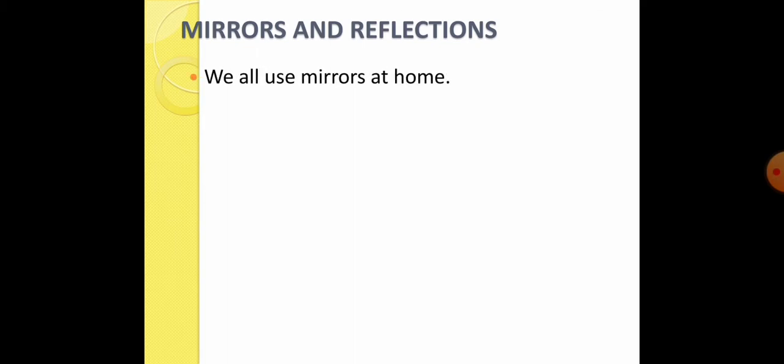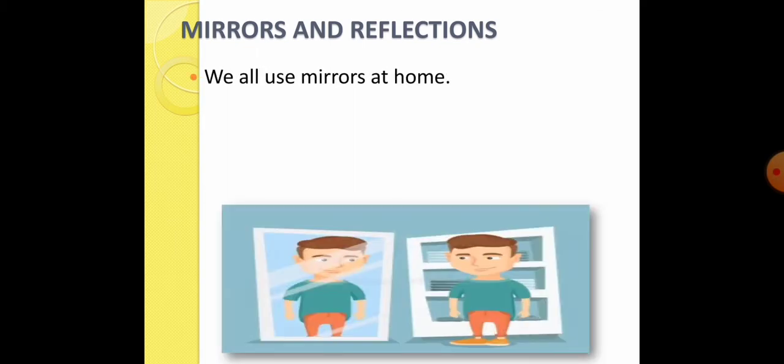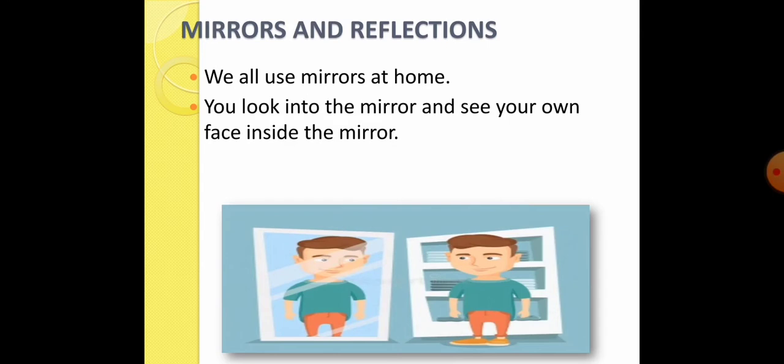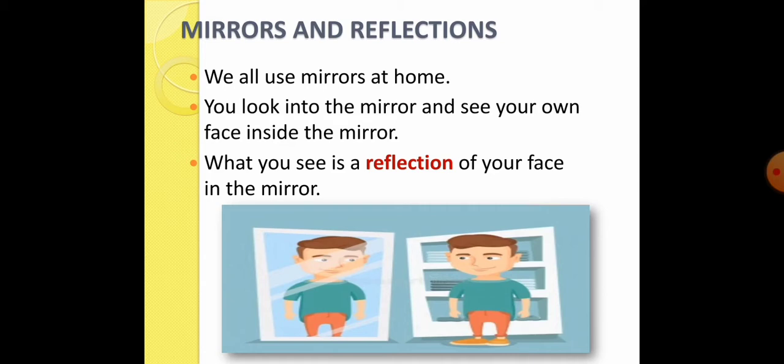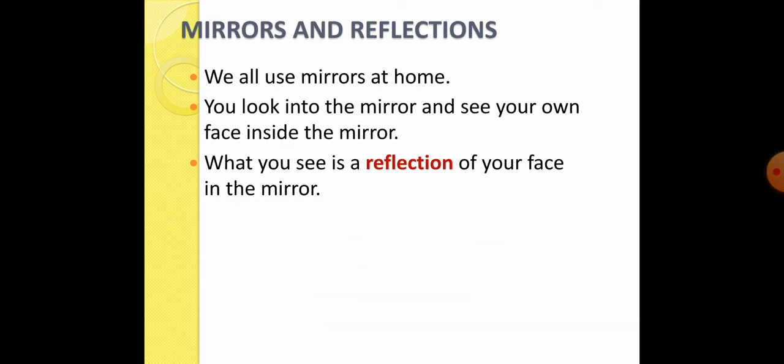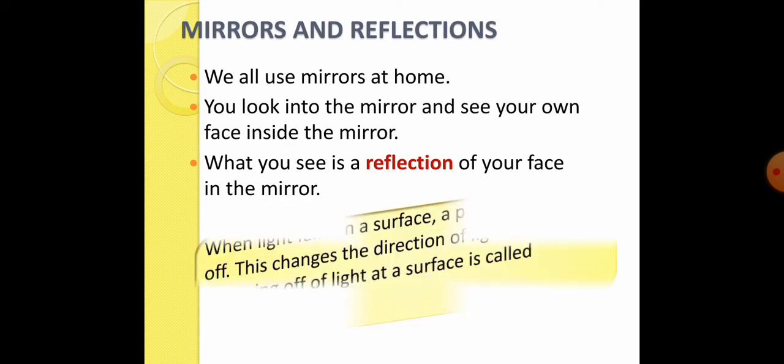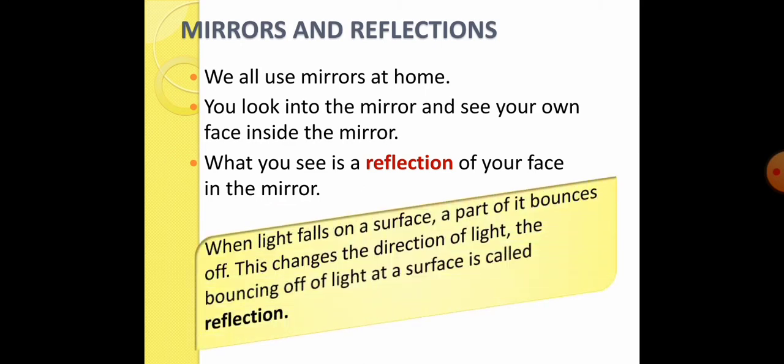Students, as we all use mirror at home, when you look into the mirror, you see your own face. Now, what you see is a reflection of your face in the mirror. So, what is reflection? When light falls on a surface, a part of it bounces off. This changes the direction of light. The bouncing of light at a surface is called reflection.